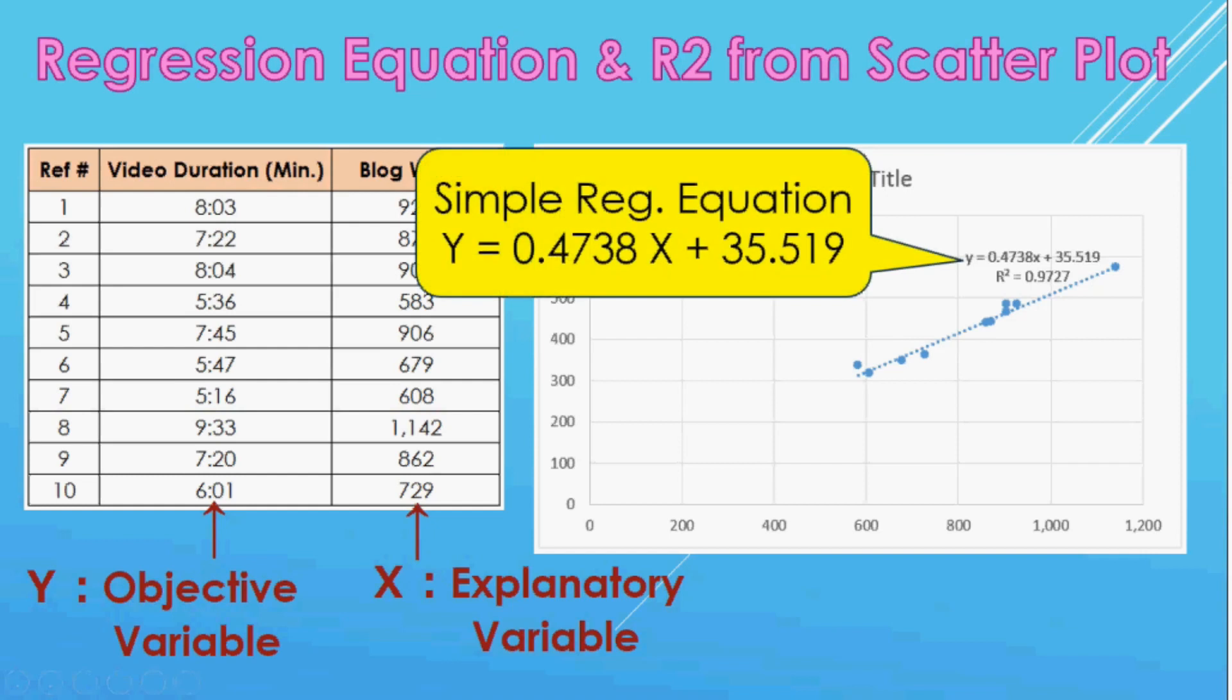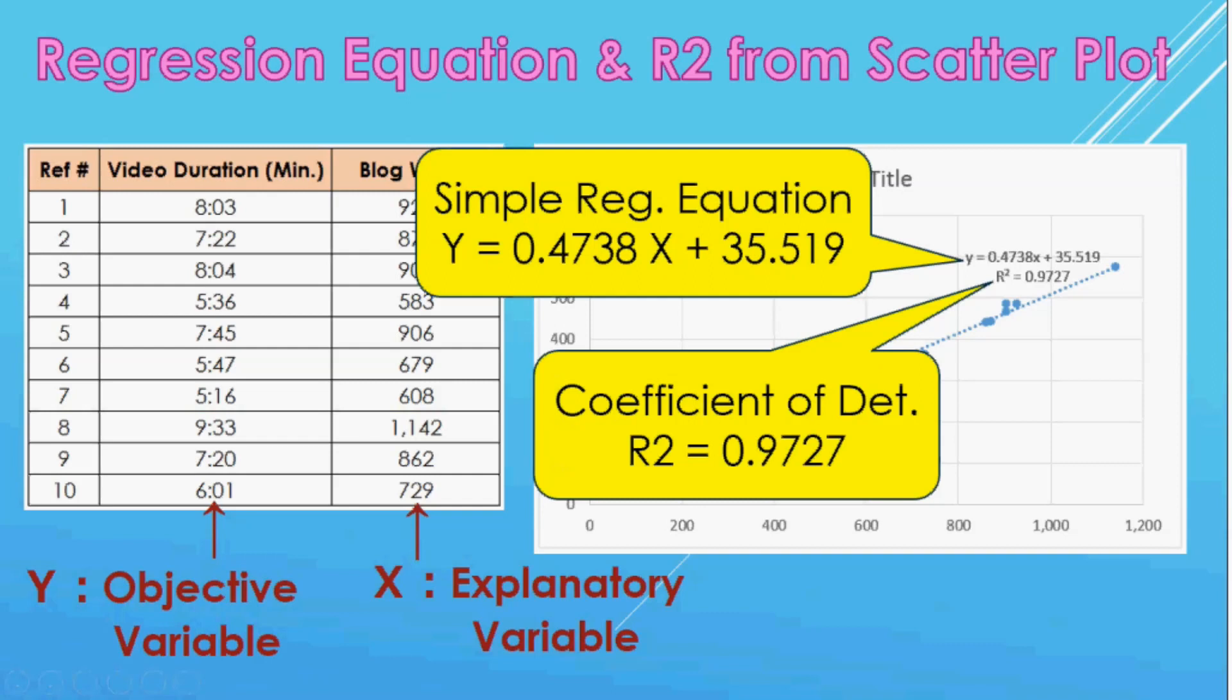Here are the results from the previous scatter plot. We obtained a simple regression equation of y equals 0.4738x plus 35.519 and a coefficient of determination of 0.977.